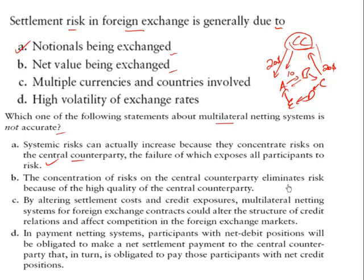The statement that 'the concentration of risks on the central counterparty eliminates risk because of the high quality of the central counterparty' is wrong — the risk gets concentrated, not eliminated. By altering settlement costs and credit exposures, multilateral netting systems could alter the structure of credit relations and affect competition in Forex markets. In payment netting systems, participants with net debit positions are obligated to make net settlement payments to the central counterparty, which in turn pays participants with net credit positions — that is correct.